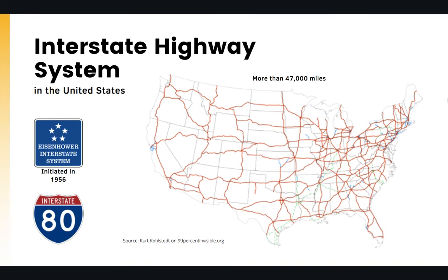Our focus in this course is road transportation and the highway system. Before we talk about highway design, it's good to refresh our memory about the highway system, at least in the U.S. The Interstate Highway System, also known as the Eisenhower Interstate System, was initiated back in 1956 and is the largest highway system in the United States, now including more than 47,000 miles of highways.